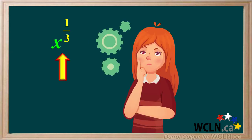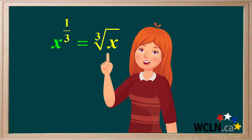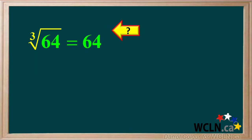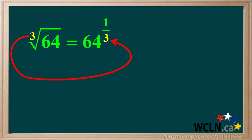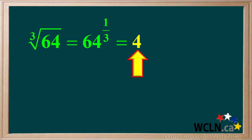So what do you think x to the power 1 third means? If you guessed the cube root of x, you're right. So let's go the other way. The cube root of 64 is the same as 64 to what power? We see it's 64 to the power 1 third. The 3, which tells us it's a cube root, is the same as the 3 in the denominator of the fractional exponent. And as you know, the cube root of 64 is equal to 4, since 4 times 4 times 4 is equal to 64.